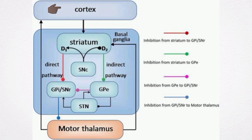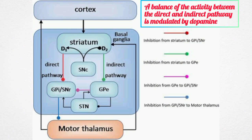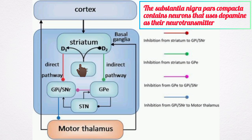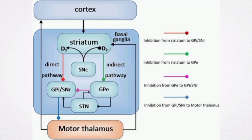The balance of activity between the direct and the indirect pathway is modulated by dopamine. The substantia nigra pars compacta contains neurons which use dopamine as their neurotransmitter. These neurons project to the striatum.